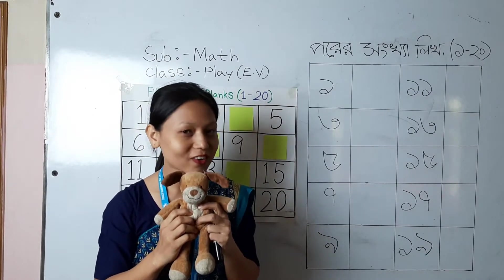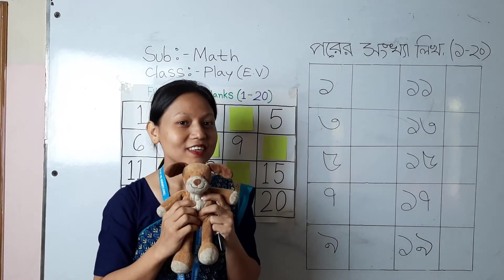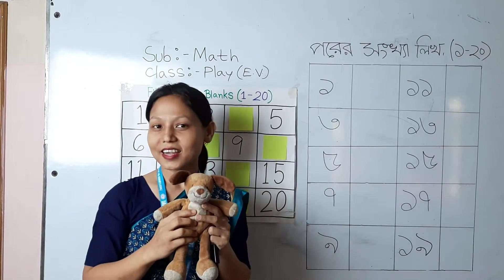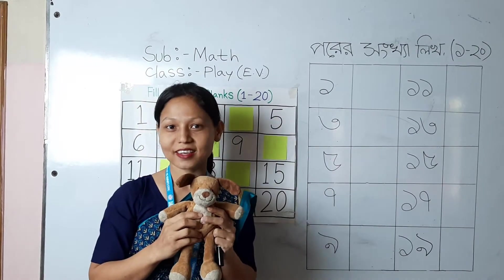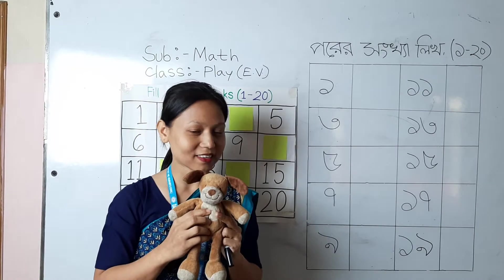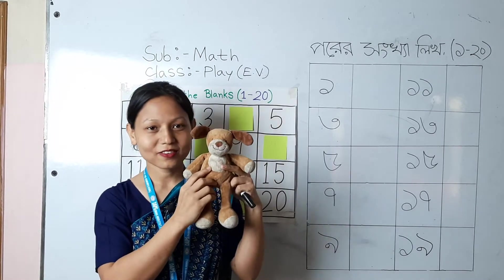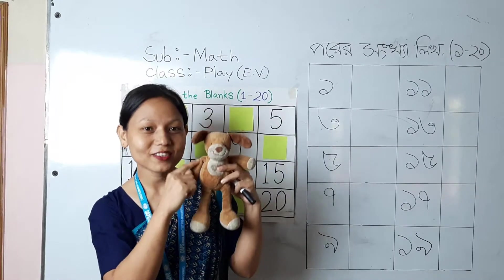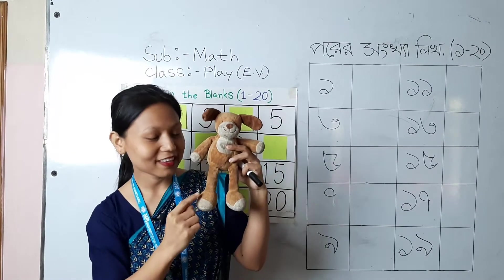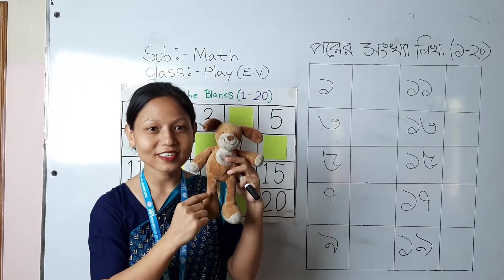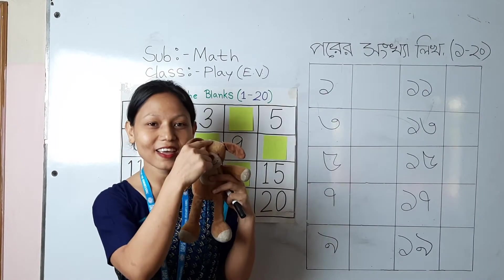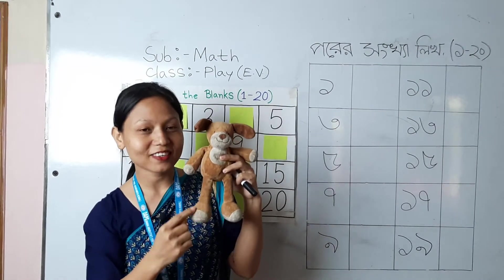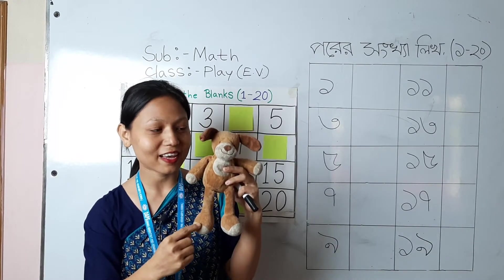Head and shoulders, knees and toes. Okay, let's sing and do the actions. Head and shoulders, knees and toes, knees and toes. Head and shoulders, knees and toes, knees and toes.